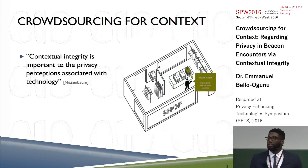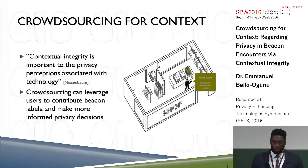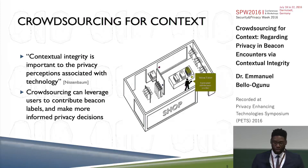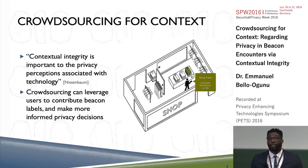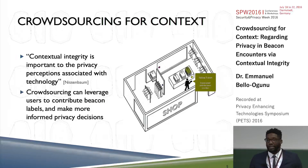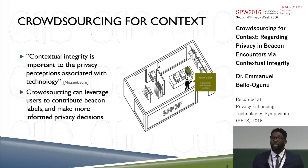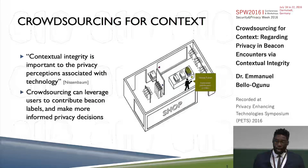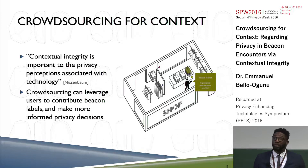So instead, I posit that we turn to the users themselves to determine what is sensitive and when and where they're willing to share. I posit that crowdsourcing can leverage users to contribute beacon labels and therefore allow them to make informed privacy decisions. Crowdsourcing can be defined as ordinary people coming together and collaborating to contribute to a body of knowledge or perhaps to solve a problem. Typical examples include Amazon Mechanical Turk, Wikipedia, and crowdfunding sites like GoFundMe and Kickstarter. Through crowdsourcing, we can allow users to come up with privacy labels so that people who have discovered beacons before can help inform other users encountering them for the first time.